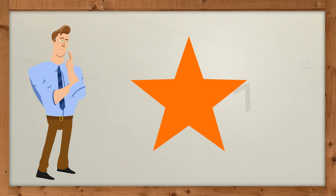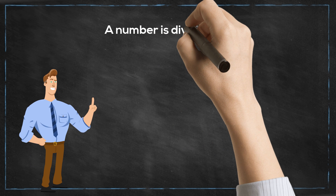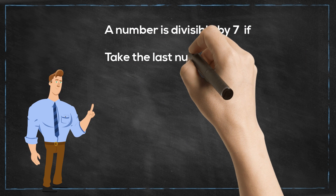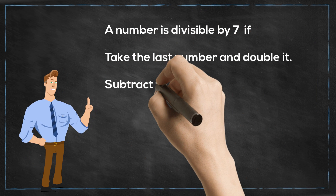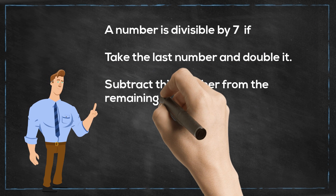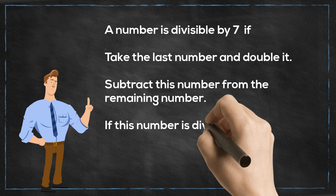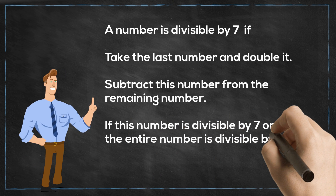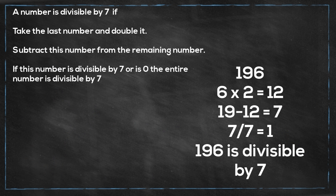Next we have 7. A number is divisible by 7 if you take the last digit and double it, then subtract this from the remaining number — if the result is divisible by 7 or is 0, the entire number is divisible by 7. For example, take 196. The last digit is 6, double it to get 12. The remaining number is 19; 19 minus 12 is 7. 7 is divisible by 7, therefore 196 is divisible by 7.